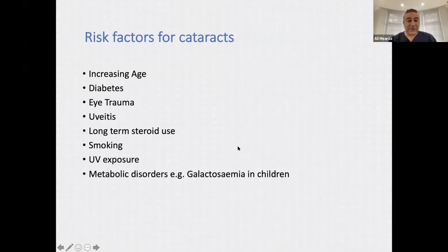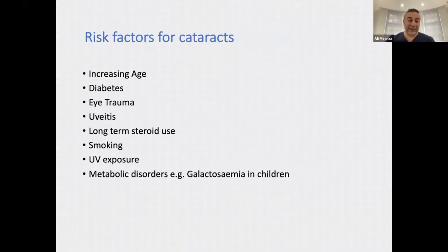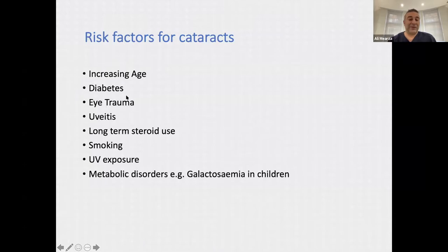What are the risk factors for cataracts? If you live long enough, you will get a cataract — that's the main risk factor. Most people will develop cataract between the age of 60 and 80. Diabetes can increase the propensity for cataract and can cause it earlier. Trauma to the eye can also cause cataract.